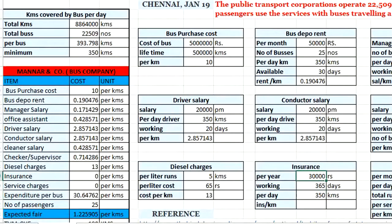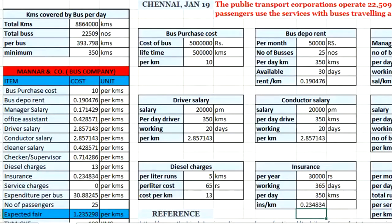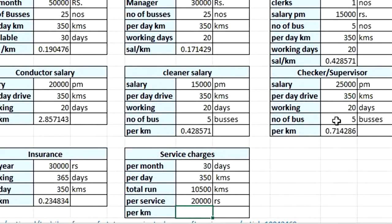Assuming we pay ₹30,000 as insurance for one full year, converting into per kilometer: ₹30,000 ÷ (365 days × 350 km per day) = ₹0.23 per kilometer spent on bus insurance.